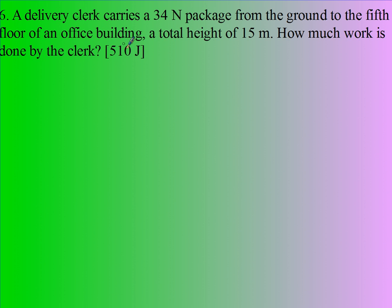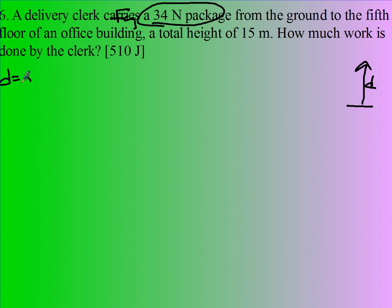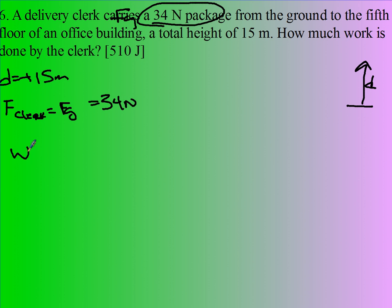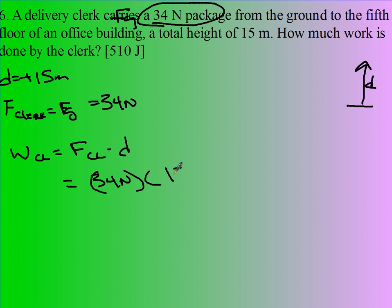Suppose I have a delivery clerk carrying a 34 newton package — that's the weight of the package — from the ground floor to the fifth floor, a total height of 15 meters. So D is positive 15 meters going up. I'm going to assume the force the clerk is applying equals the force of gravity, so F is 34 newtons, assuming he moves at constant speed. The work done by the clerk is the force applied times displacement: 34 newtons times 15 meters, which is 510 joules.